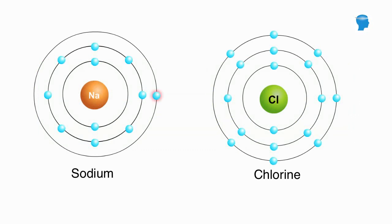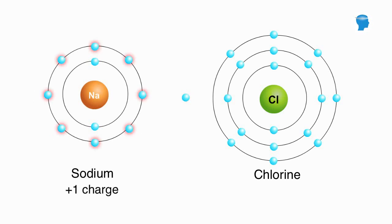Since sodium has only 1 electron in its third shell, it has a tendency to give up that electron. Once it does, the remaining outer shell contains 8 electrons. This loss of an electron gives sodium a slightly positive charge.